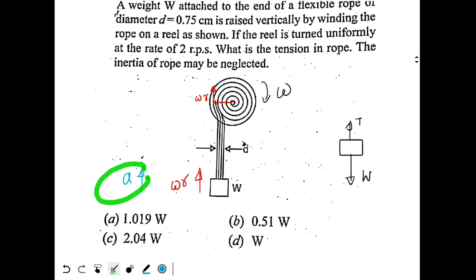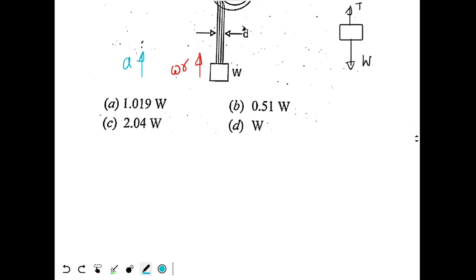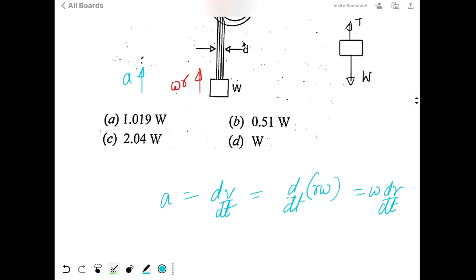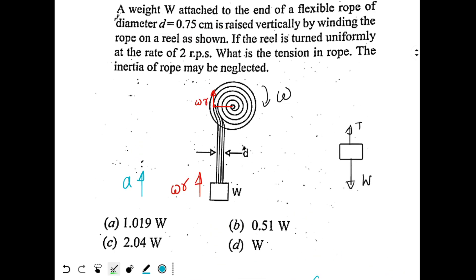To find the tension we need the acceleration. Acceleration a equals dv/dt, which is d/dt of (rω). Since ω is constant, we get a = ω·(dr/dt). So if we know the rate at which the radius is changing, we can solve the problem.